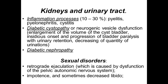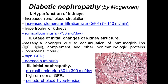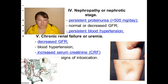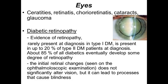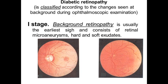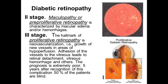In the kidneys and urinary tract, there are mostly inflammatory processes like pyelitis, pyelonephritis, cystitis, and also development of diabetic nephropathy because of microangiopathy. Diabetic nephropathy is represented by glomerulonephritis and even chronic kidney failure. For the eyes, diabetic retinopathy is rarely present at diagnosis in type 1, is present in up to 20% of type 2 patients at diagnosis, and about 85% of all diabetic patients eventually develop some degree of retinopathy. There are three stages of retinopathy: the first stage is background retinopathy, the second is maculopathy or pre-proliferative retinopathy, and the third is proliferative retinopathy, which can even result in blindness of the patient. This is the most common cause of blindness.